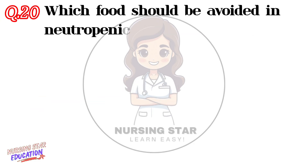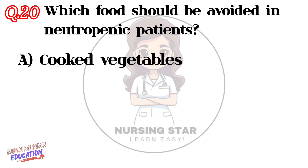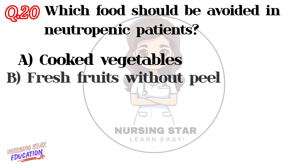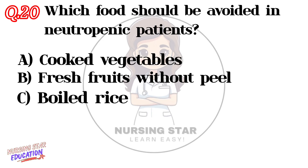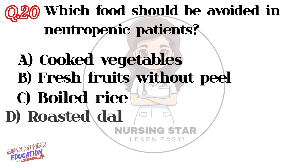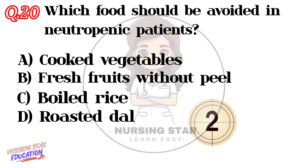Question number twenty: Which food should be avoided in a neutropenic patient? Option A: Cooked vegetables. Option B: Fresh fruits without peel. Option C: Boiled rice. Option D: Roasted dal. Correct answer: B — Fresh fruits without peel.